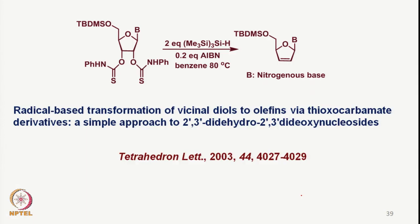We can also use TTMS and AIBN with substrates containing nucleic bases to generate two radicals that couple or form the corresponding double bond. This is a radical-based transformation of vicinal diols to olefins, proceeding via the thiooxocarbonate derivative. You can start with the corresponding sugar-based molecule and carry out this reaction, which was published in 2003.